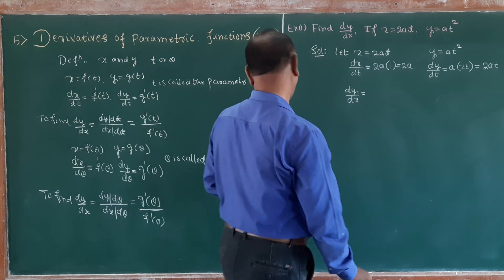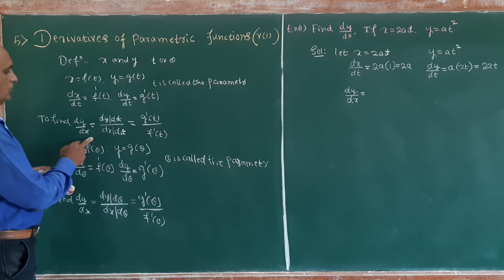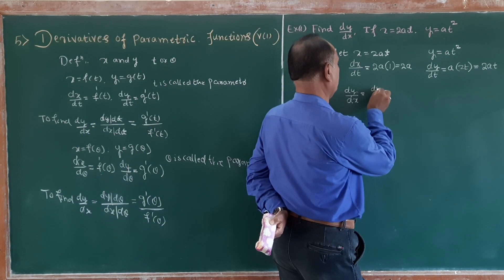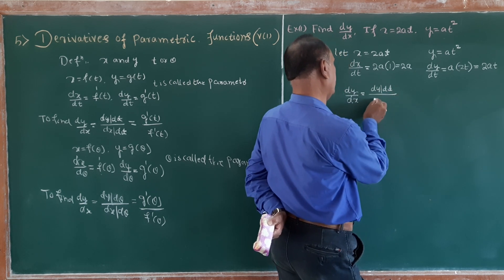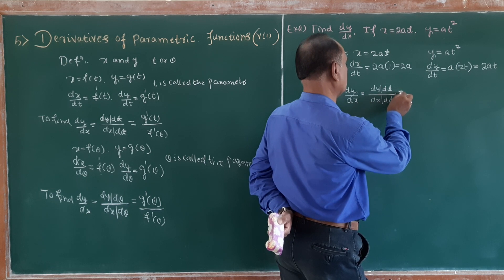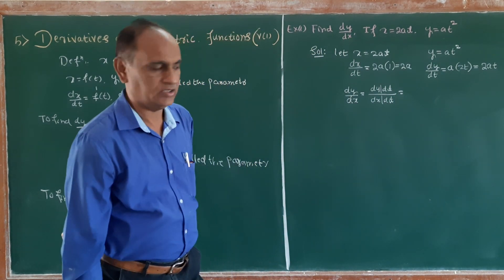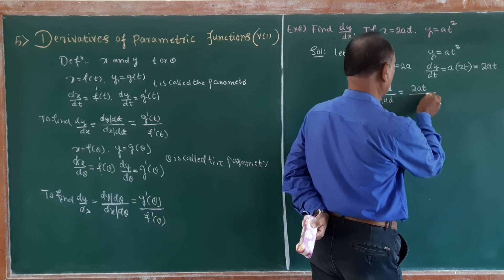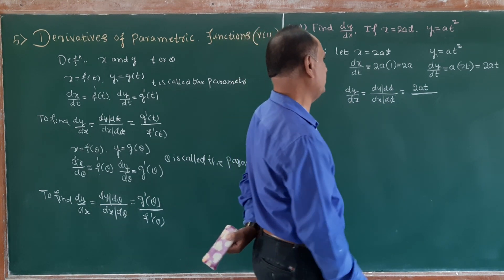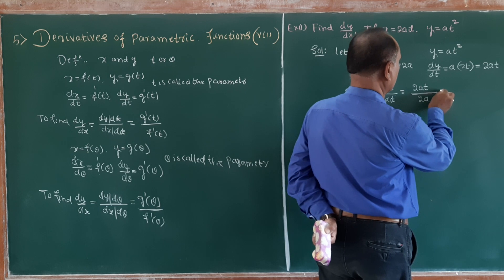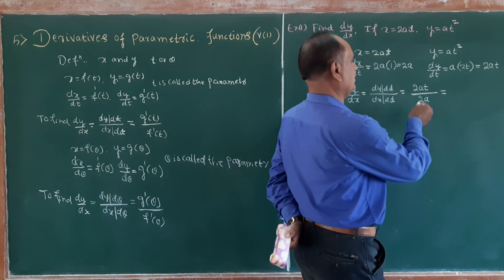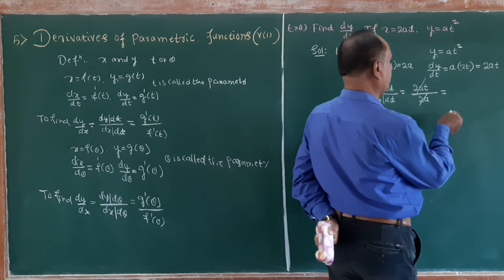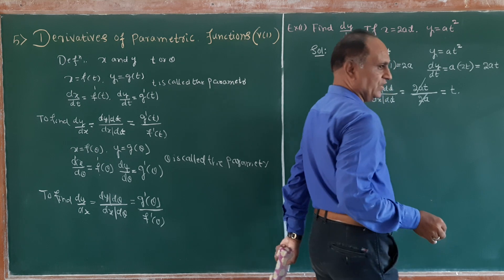Use the relation: dy/dx equals dy/dt divided by dx/dt. dy/dt value is 2at, so the numerator is 2at. dx/dt value is 2a, so the denominator is 2a. The 2a cancels, and simply dy/dx is equal to t.